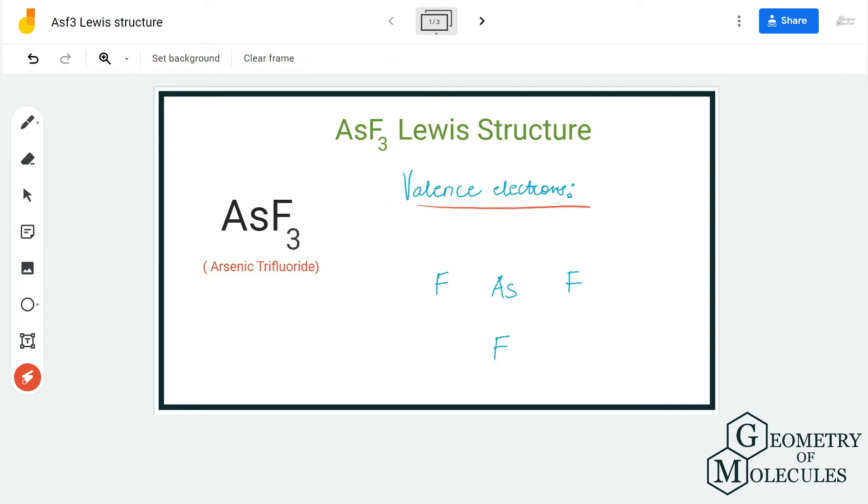need to know the total number of valence electrons for this molecule. We have one atom of arsenic which has five valence electrons in its outer shell, and three atoms of fluorine where each fluorine atom has seven valence electrons. In total we have 26 valence electrons for AsF3.